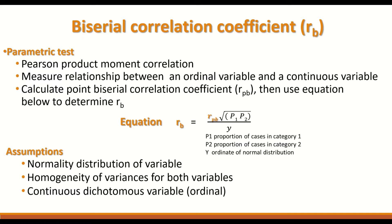The test also requires a continuous dichotomous variable. So you have two variables: one of them is continuous, and the other one is ordinal or a continuous dichotomous variable. These are the conditions under which the biserial correlation coefficient can be used to calculate the correlation between those variables — one is continuous dichotomous and the other is a continuous variable.